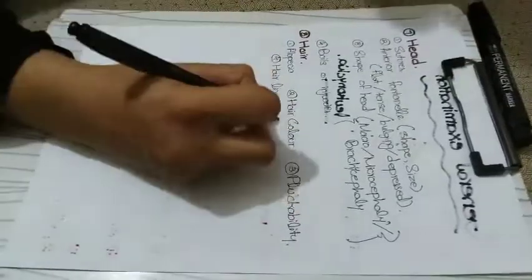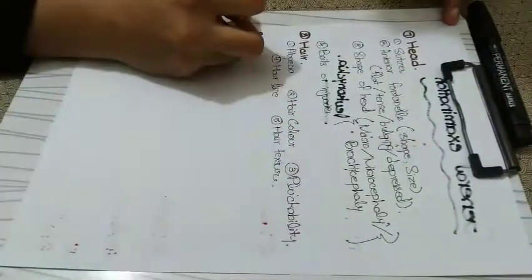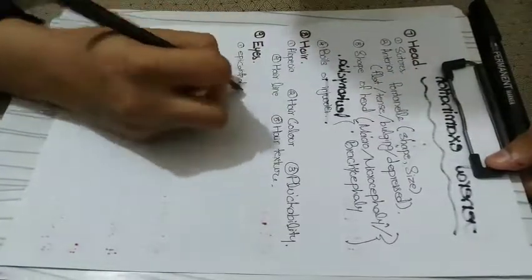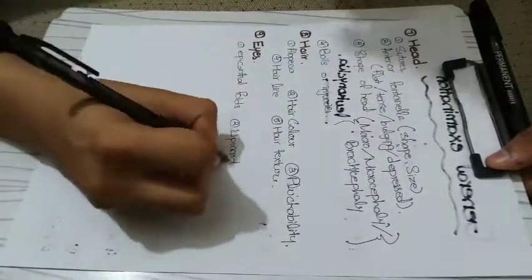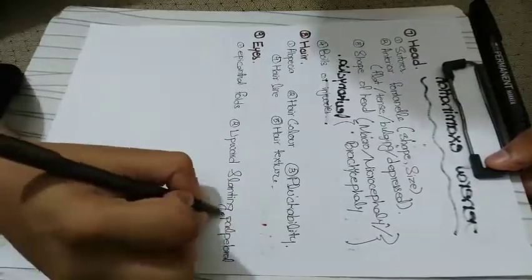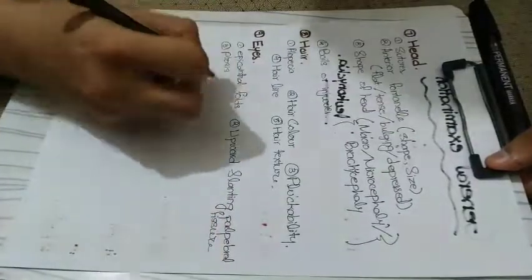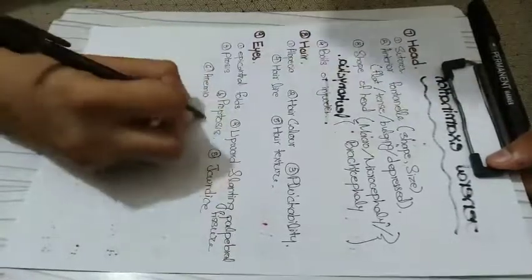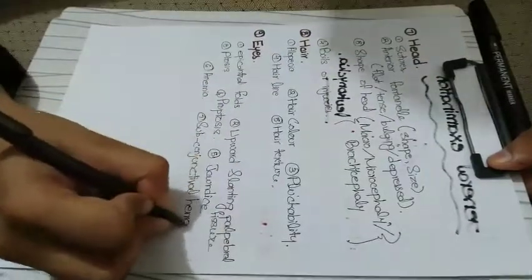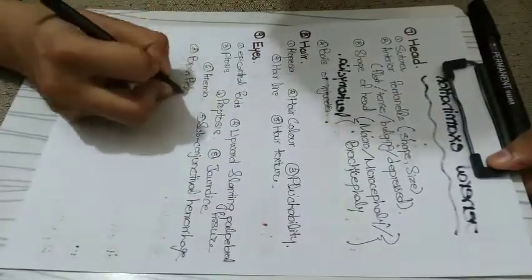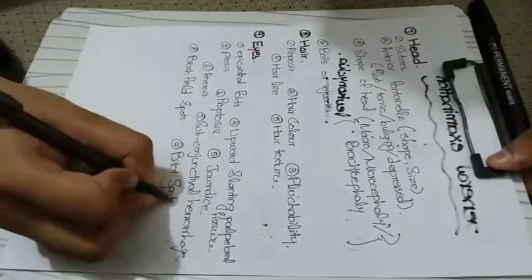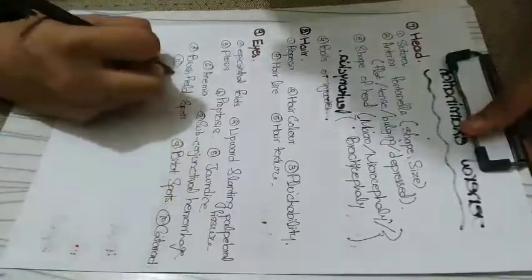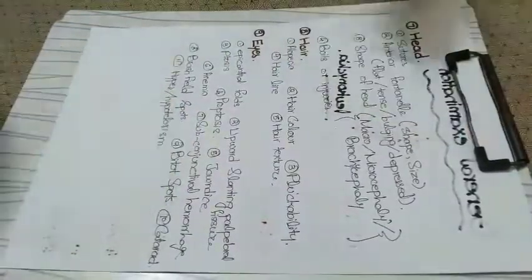We check the hair: whether there is alopecia, hair color, pluckability, hairline, and hair texture. Then we go to the eyes and check for epicanthal folds and upward slanting of the palpebral fissure as in Down syndrome. Check for ptosis, proptosis, jaundice in the palpebral conjunctiva, subconjunctival hemorrhage, Brushfield spots as in Down syndrome, Bitot's spots in vitamin A deficiency, cataract, and hyper- or hypotelorism.